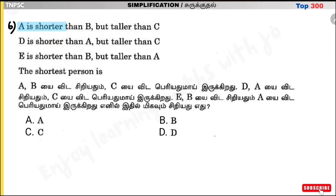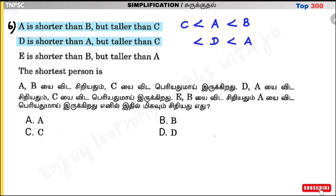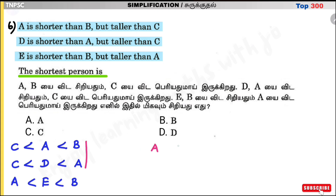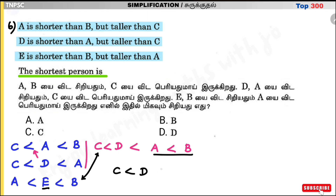Question number 6. A is shorter than B but taller than C. D is shorter than A but taller than C. E is shorter than B but taller than A. Combining comparisons: E < B, A < E, D < A, C < D. So the order from tallest to shortest is B > E > A > D > C. The shortest person is C. Answer: C is correct.